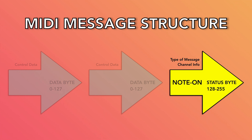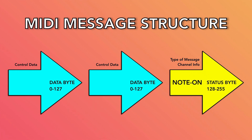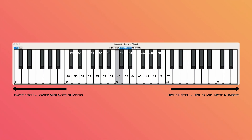With a note-on message, the status byte defines that the message is a note-on message, and it also defines what MIDI channel you're using. The data bytes convey the musical data. The first data byte defines what pitch you're playing, conveying pitch using values 0 to 127. Note number 60 is middle C — designated as C4 in traditional music, or C3 in most DAWs. As you play notes higher on the keyboard, MIDI note numbers get higher; lower notes get lower numbers. So C-sharp 3 is 61, D3 is 62, A440 is 69, and the C below middle C is 48.